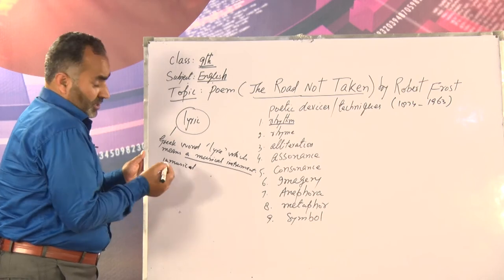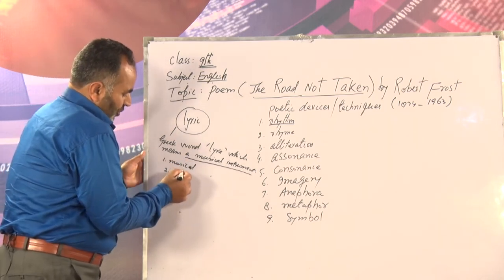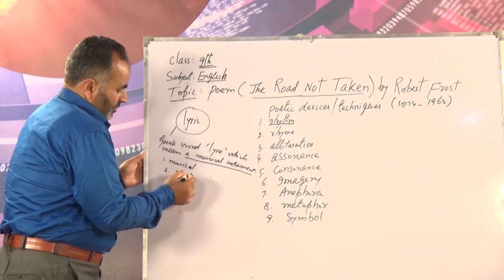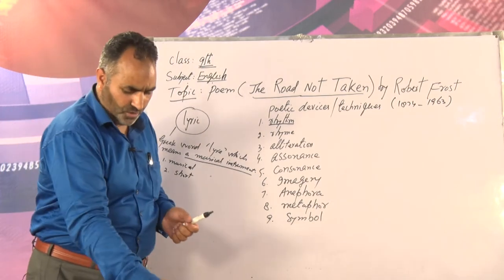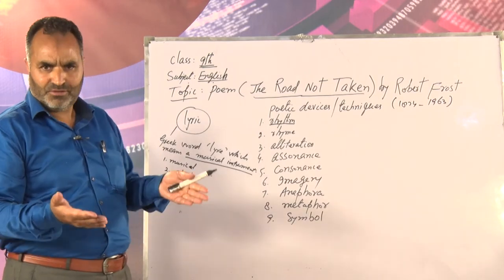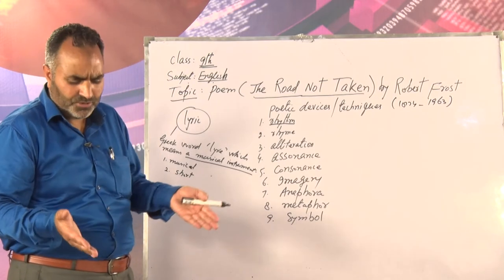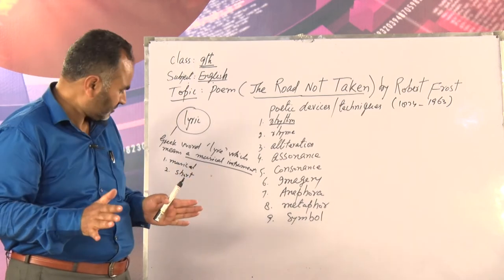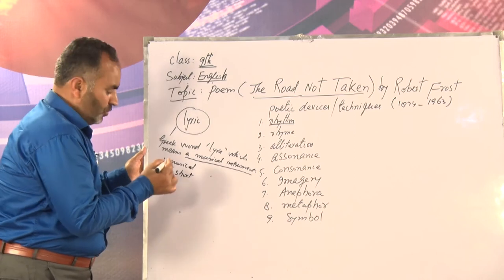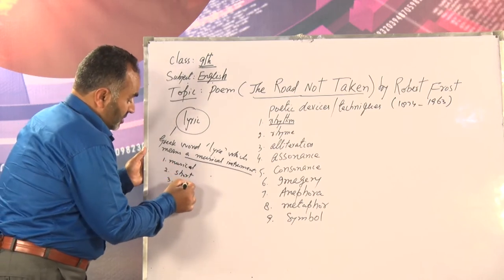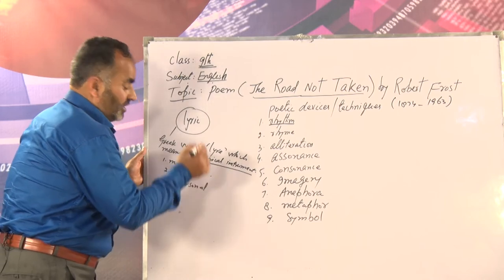A lyric is generally short. Look at this poem — it is not a long poem. One, two, three, four stanzas, five lines each — so it is a twenty-line poem. It is not a long poem. And then this lyric is also a personal poem.